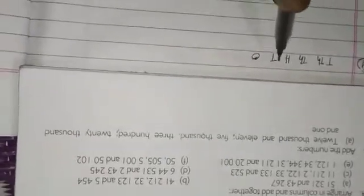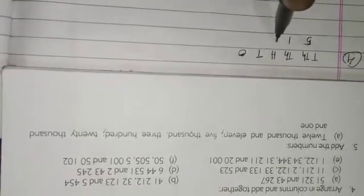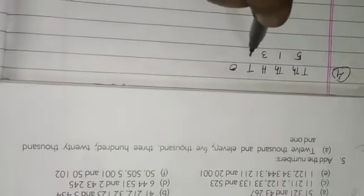Like this. Then arrange the number in their place. 51,321 and 43,267.